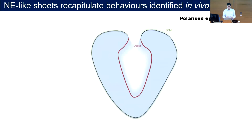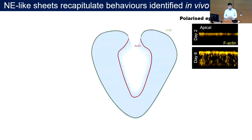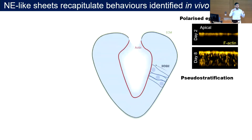We know that this is a polarized epithelium with an apical and basal site, shown here in red and green respectively. In our system, over the course of eight days, we've been able to see apical-basal elongation of the epithelial sheets, as well as enrichment of F-actin on one side indicating the apical side, and the polarization of the epithelium. The neuroepithelium is also pseudostratified, meaning multiple rows of nuclei but a single apical and basal side, and these nuclei undergo interkinetic nuclear migration — the translocation from the apical to the basal side.